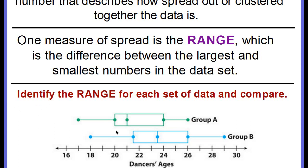This is what we call a double box plot where there are two sets of data that we're wanting to compare their spreads. These are dancers' ages, there's two different groups, group A and group B. We want to find the range for each, so range is just simply high minus low.